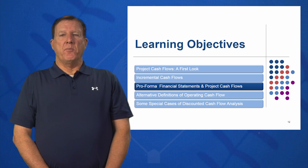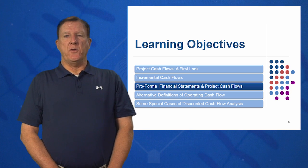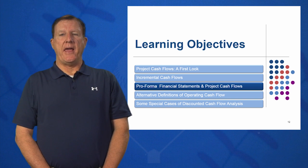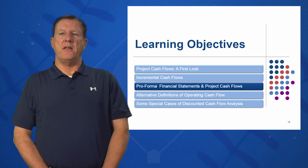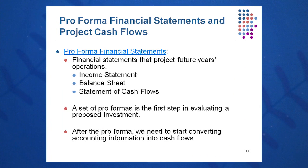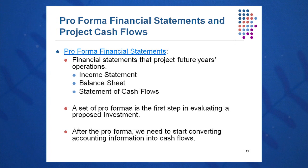In learning objective three, we're going to look at and build some pro forma financial statements to analyze projects and make a good investment decision. The three we will look at closely are the income statement, the balance sheet, and the cash flow. We're going to set up a one-page sheet of assumptions for each statement — a one-page income statement with assumptions, a one-page balance sheet with assumptions — and from those two, we'll derive a statement of cash flows. We'll do these for five years in most cases, and we're ultimately interested in cash flows.